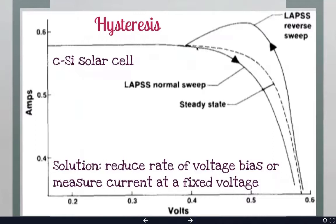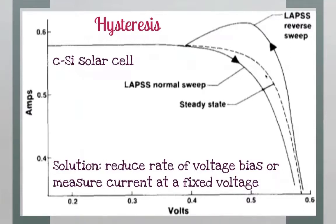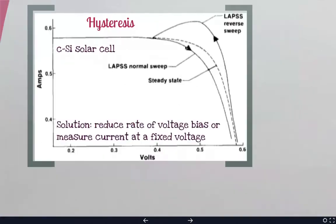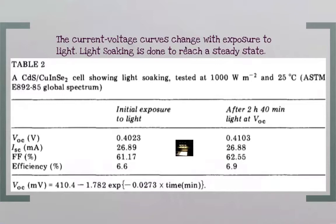Hysteresis is problematic because we don't know which IV curve is correct. The steady state is shown separately. The way to avoid this is to do a much slower measurement so all carriers have time to diffuse through the system. Another option is to measure steady state by fixing the voltage, measuring the current, then moving to the next voltage point — much slower but more accurate. In some materials, the IV curve also changes with exposure to light — some nonlinear effects not fully understood — and this is still an active area of research.